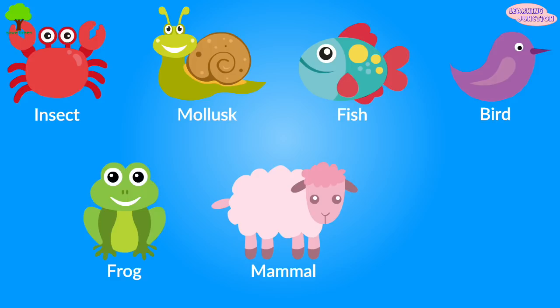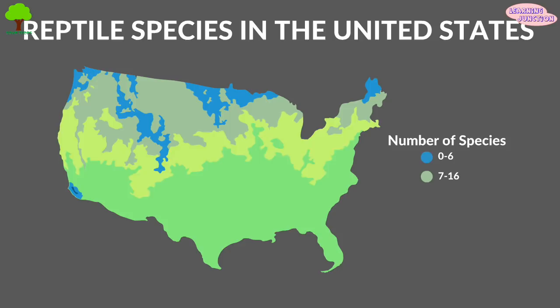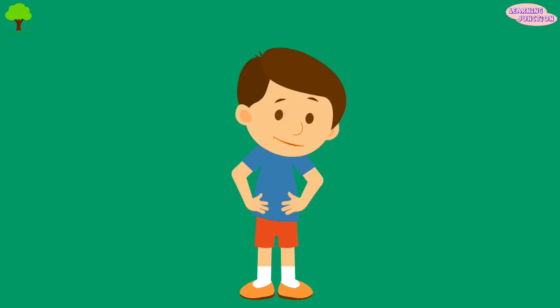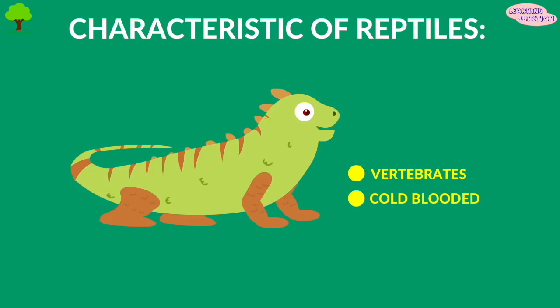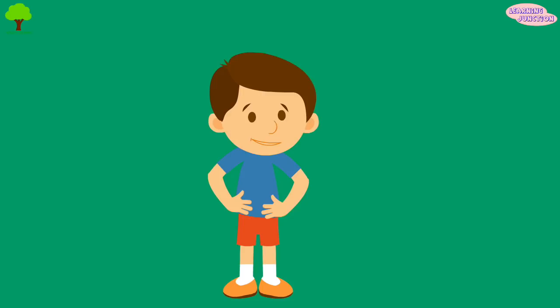Different reptiles tend to live in different areas. The majority of reptiles live in temperate and tropical climates. Common characteristics of reptiles: they have a backbone or spine, which means they're vertebrates. They're cold-blooded or ectothermic. They have dry and scaly skin and lungs for breathing. Most reptiles can survive for a long time without food.